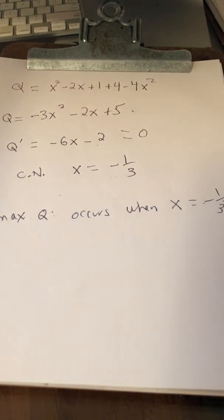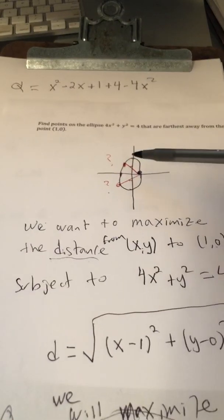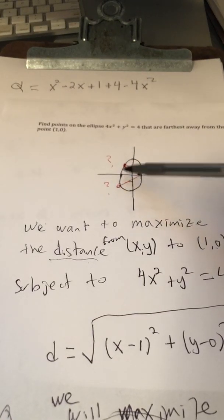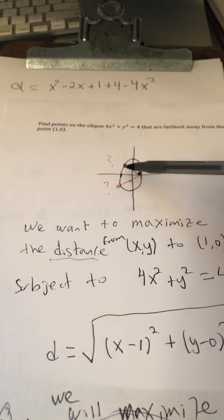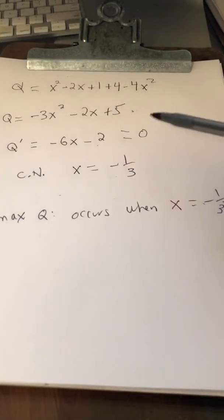So what I'm telling you is that the maximum Q occurs when x equals negative 1/3. Now, go back to our picture or our graph. We expect two answers, right? And for both of them, the x-coordinate is negative.